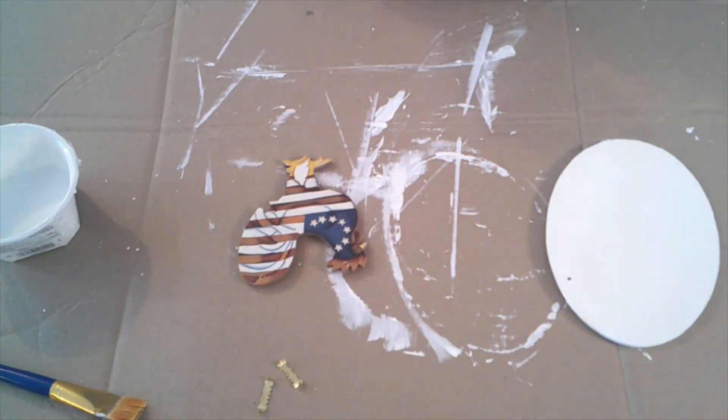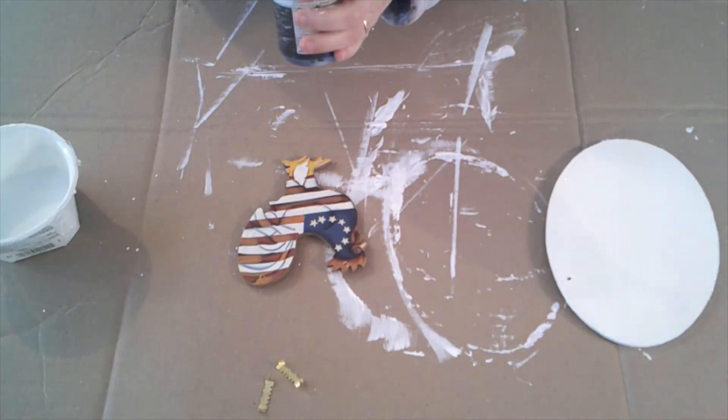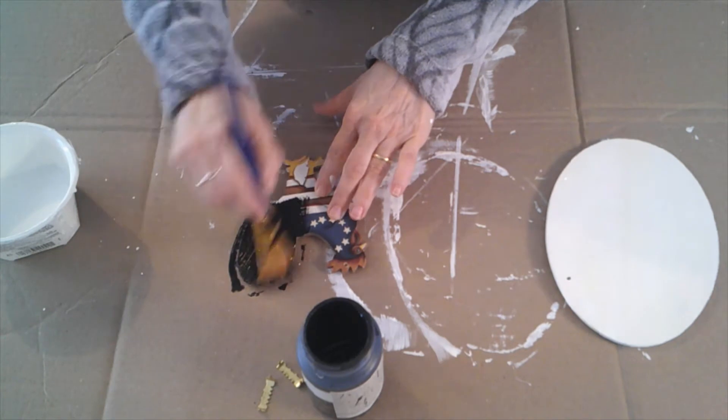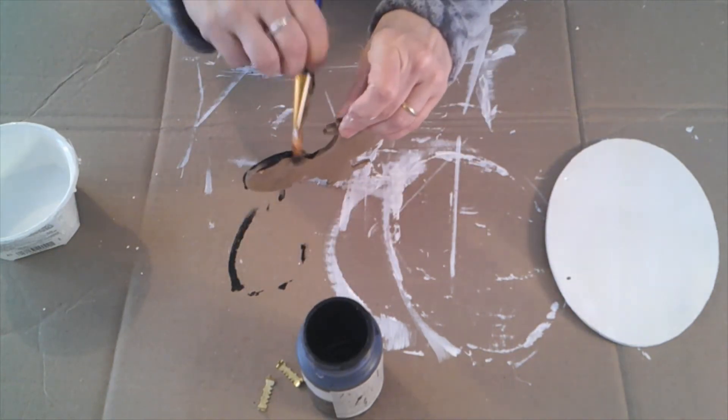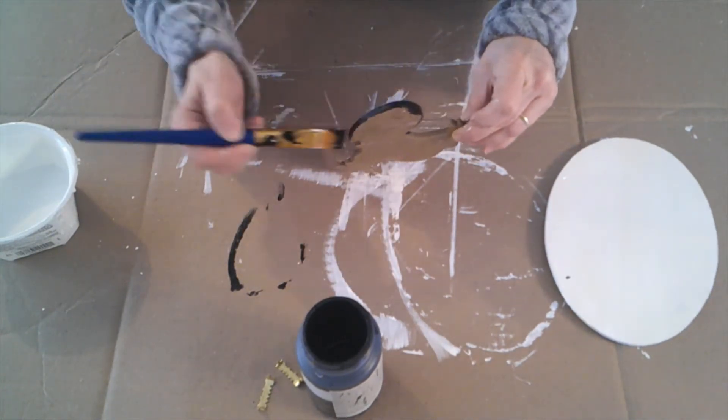The next thing I did was paint this cute chicken. I found this chicken in my supply stash and I was super excited to use it. I painted it black and again it took two coats.